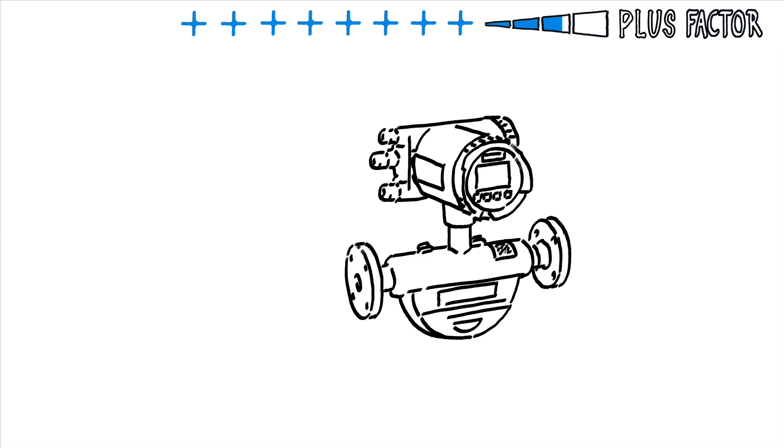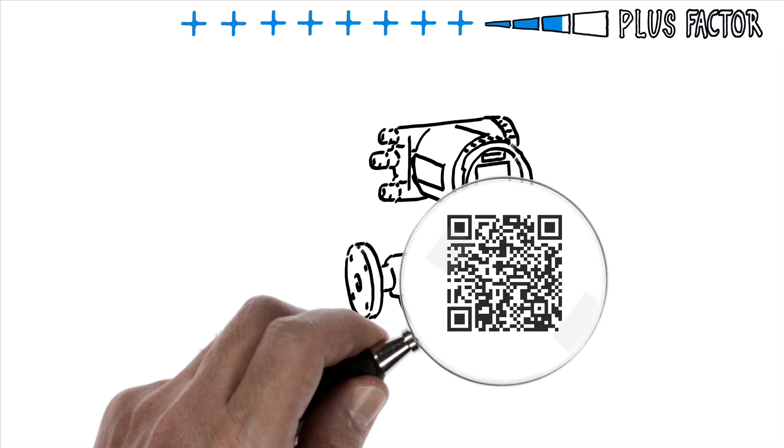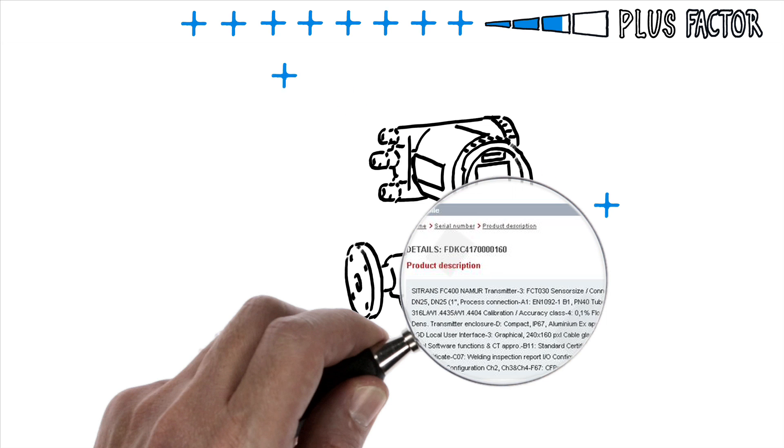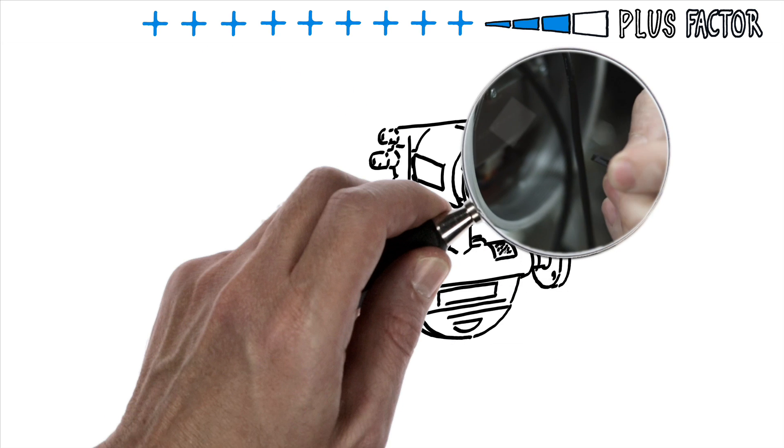How about direct access to information about my meter? On-site. Immediately. On a micro SD card? The sensor flash?